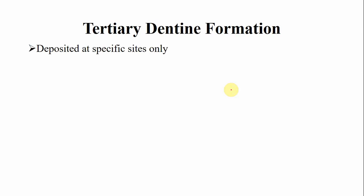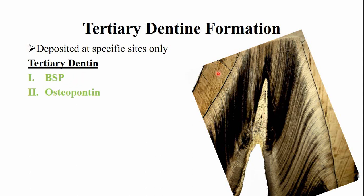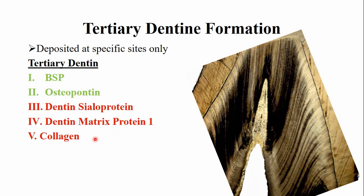Tertiary dentine forms only at specific sites. In a ground section of a tooth, you can see tertiary dentine formation. Because tertiary dentine forms at a very fast pace, it lacks the tubular structure. It contains more bone sialoprotein and osteopontin, and lacks dentine sialoprotein, dentine matrix protein, and collagen type 1. The structure of tertiary dentine appears more like bone; therefore, it is sometimes also referred to as osteodentine.